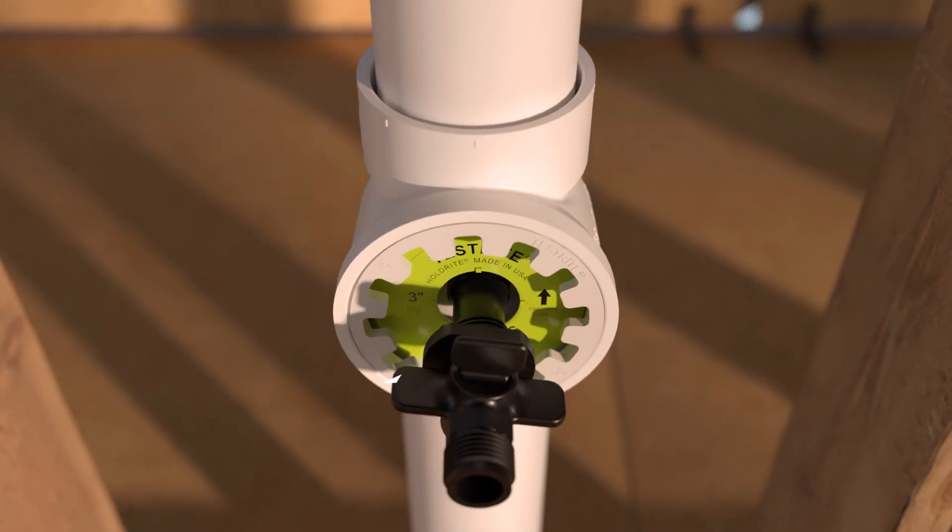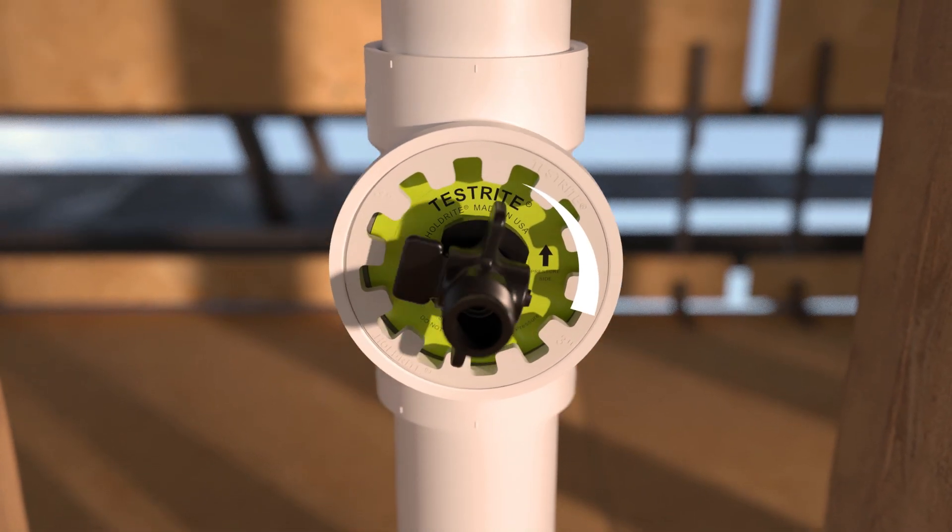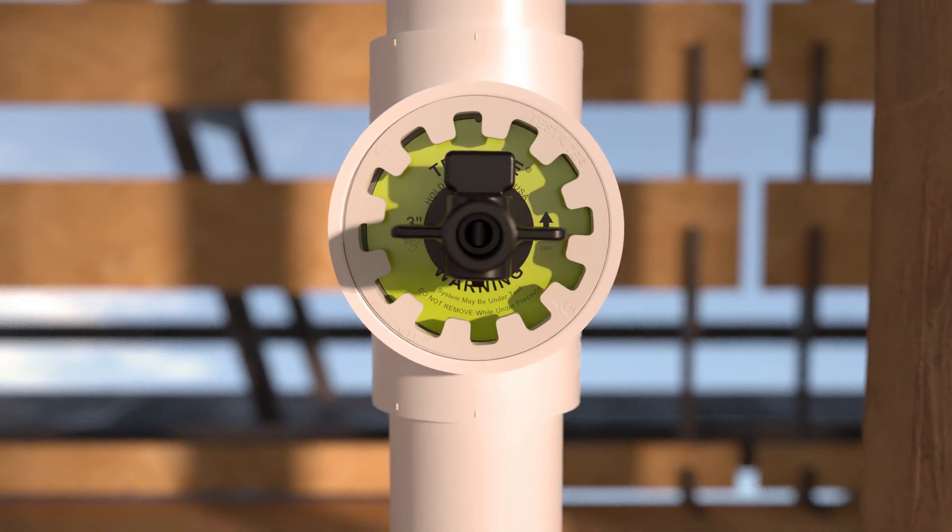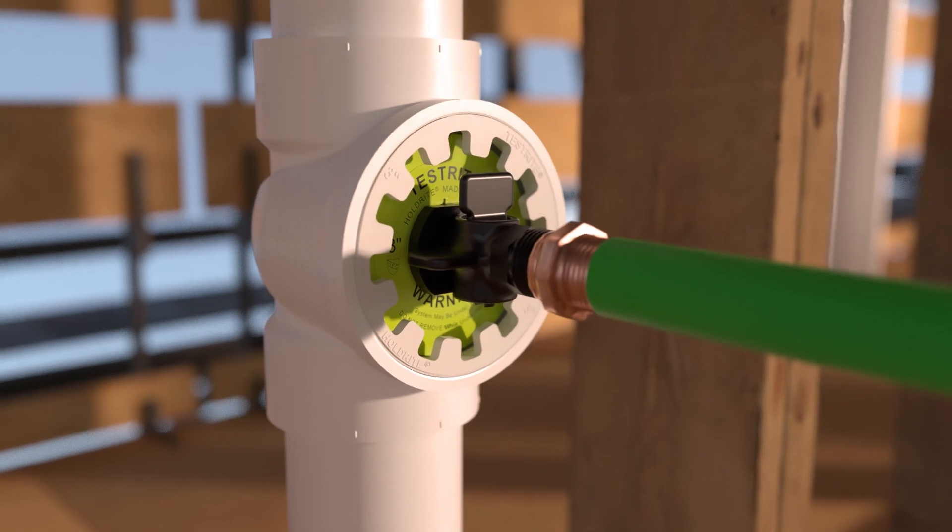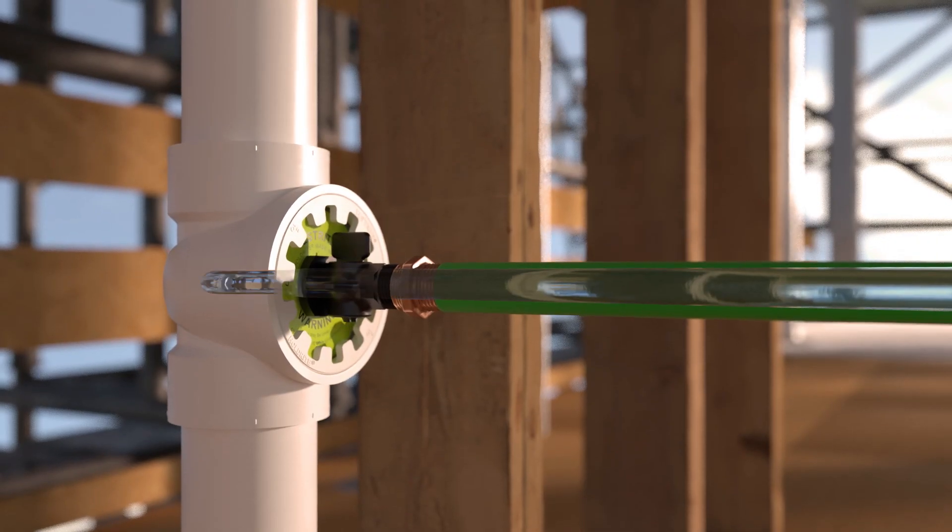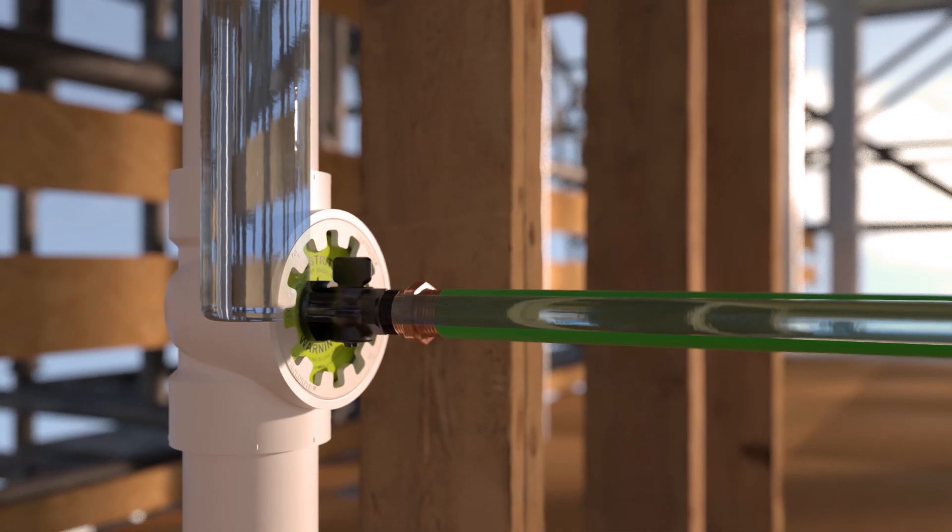Prior to filling the system, hand-tighten the fill and drain stem by turning it clockwise until snug. Fill the DWV system through the pipe stack from above with a garden hose or by connecting your hose to the fill and drain stem on the test wedge. Open the spigot ball valve and fill the system up from the test tee location.